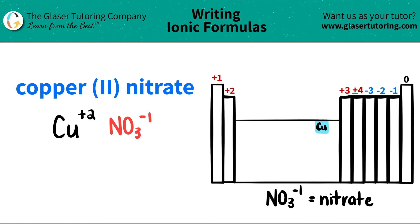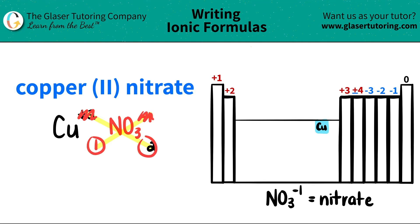Now since we have both components, we just do this little trick where we crisscross the charges down to see how many of each we need. This plus two crisscrosses down, telling me that I need two nitrates. And then this negative one crisscrosses down, telling me that I just need one copper. When you do this crisscrossing, don't worry about the charges anymore — just use the subscripts as counting numbers without worrying about positive or negative.